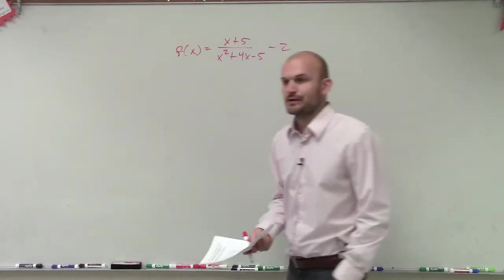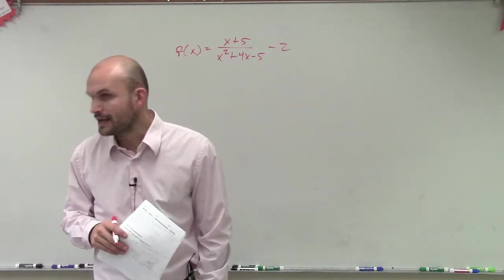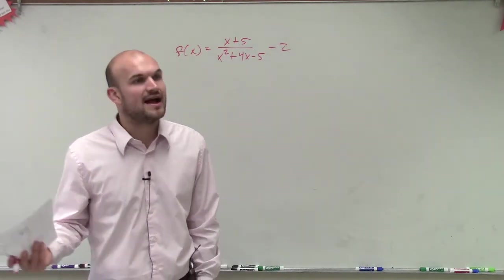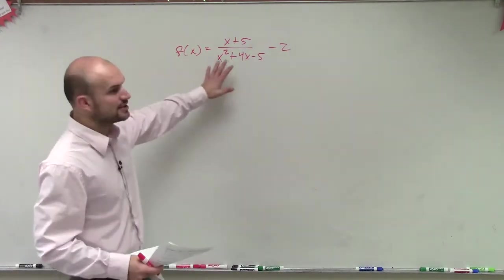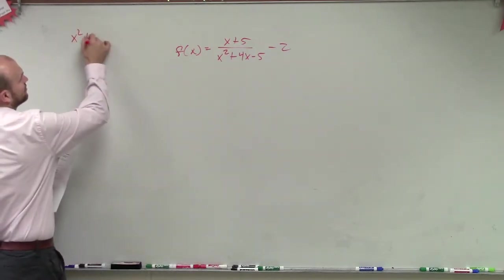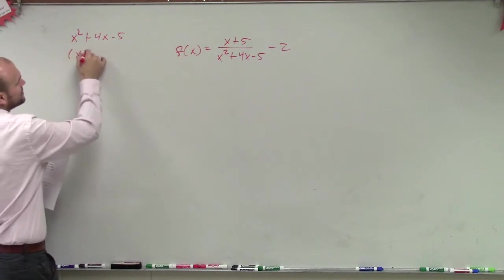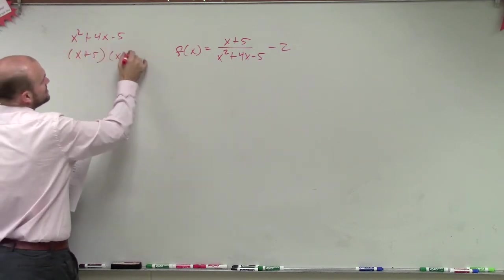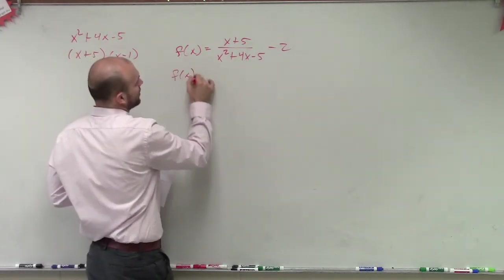The first thing I'm always going to be doing, rather than even worrying about what information I need to apply, I always want to look - is this at least even factorable? Can I factor anything out? And we look at this problem, we have a trinomial over here, x squared plus 4x minus 5. Well, that can be factored into x plus 5 times x minus 1, correct?